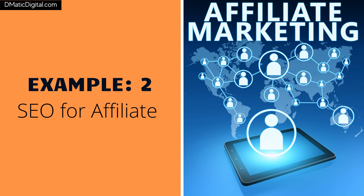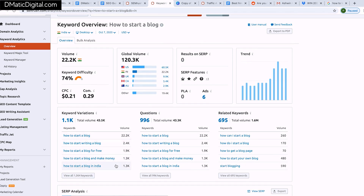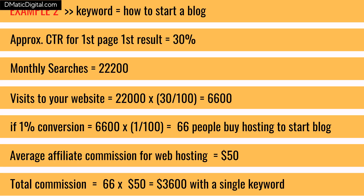Example two: suppose you are doing affiliate marketing and you've published a post 'how to start a blog' on your affiliate website, promoting a web hosting company. If you research 'how to start a blog' on SEMrush, you'll find monthly searches of around 22,000 with many similar keywords. If your post ranks on the first page, you'll receive around 6,600 visits. With just 1% conversion, you get 66 conversions monthly. At $3,300 average commission per conversion, you'll make around $3,300 from a single keyword.